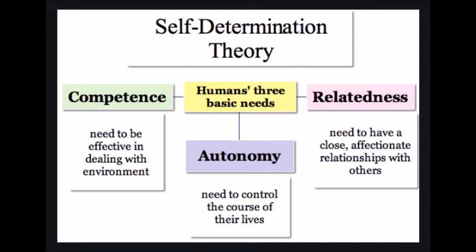We can depict this statement as: self-determination theory focuses on competence, which is the need to be effective in dealing with the environment; autonomy, which is the need to control the course of one's life; and relatedness, which is the need to have a close, affectionate relationship with others. According to self-determination theory, there are three types of needs — competence, autonomy, and relatedness — which should be fulfilled for humans or employees to get motivated.